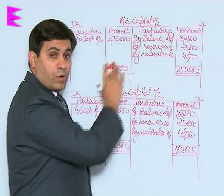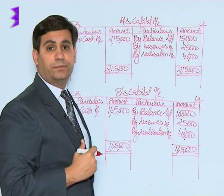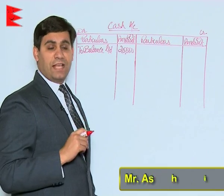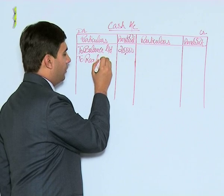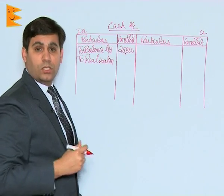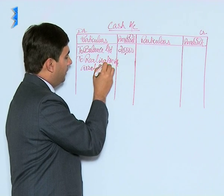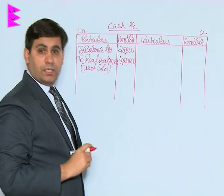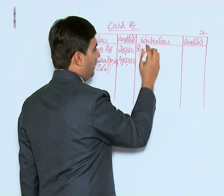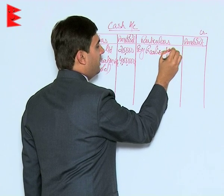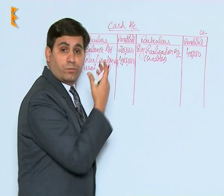Finally, once the capital accounts are prepared, we move to the cash account. There was an opening balance of ₹20,000 from the balance sheet, written on the debit side as 'to balance brought down.' The asset realization of ₹4 lakh appears on the debit side as 'to realization account — assets sold ₹4 lakh.' The creditor payment of ₹40,000 is shown on the credit side as 'by realization account — payment to creditors ₹40,000.'